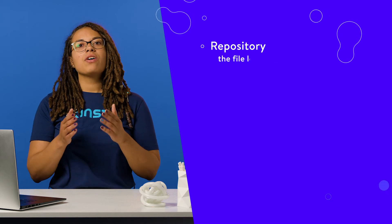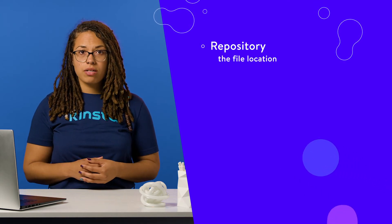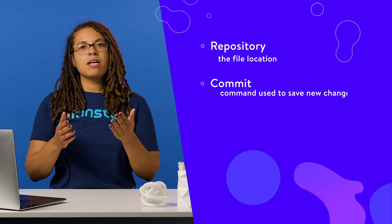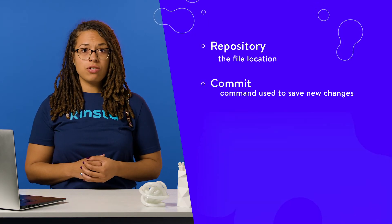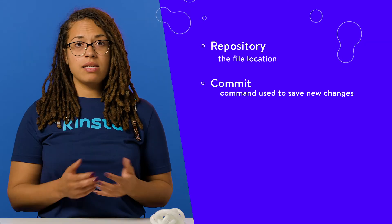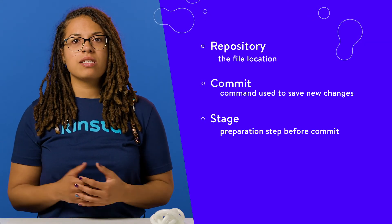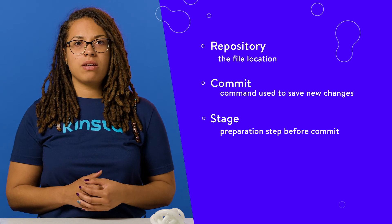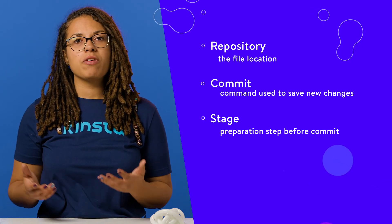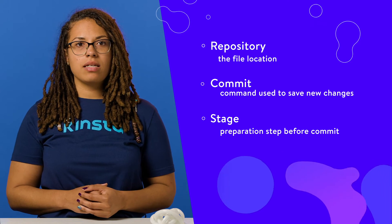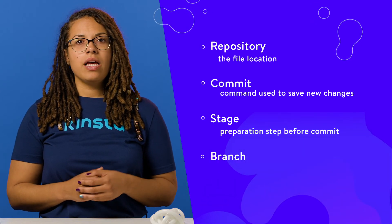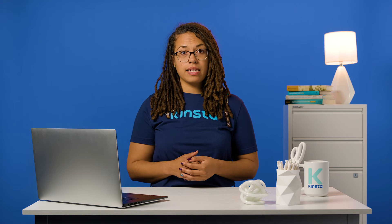Repository: the file location where your project is stored. Commit: the command used to save new changes to your project in the repository. Stage: before you can commit changes in Git, you'll need to stage them — this gives you the chance to prepare your code before formally adding it to your project. Branch: the part of your project you're actively developing. To connect Git to GitHub, you'll need to add a repository and make at least one commit. You'll then have enough of your project established to start working in GitHub.